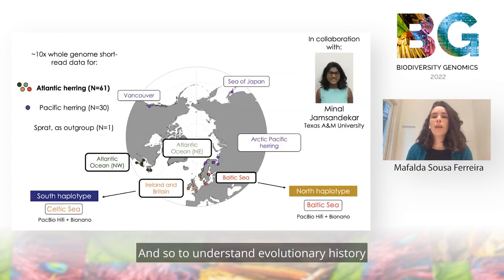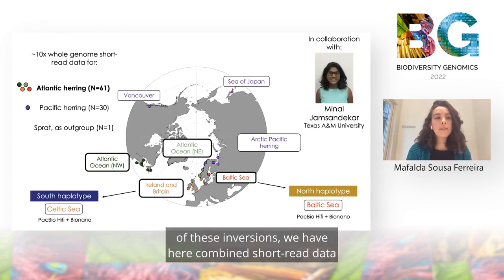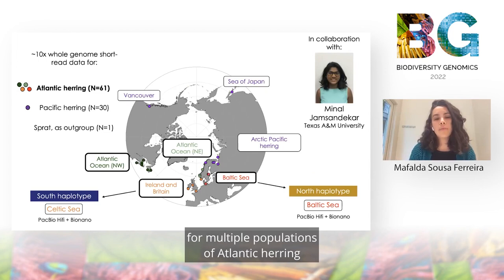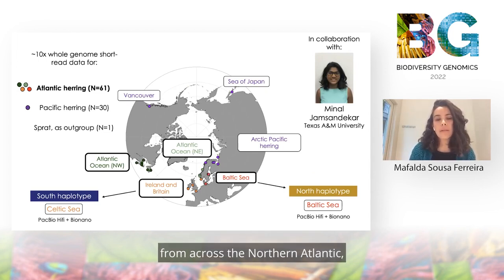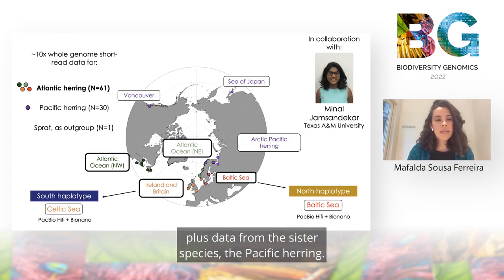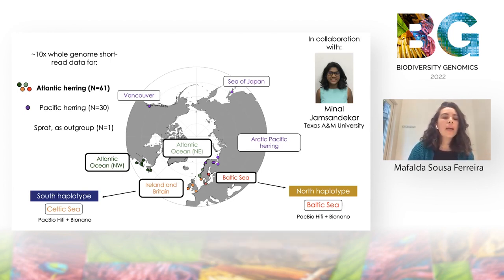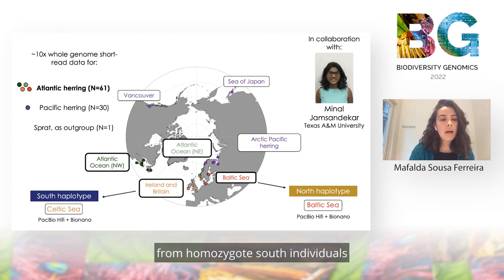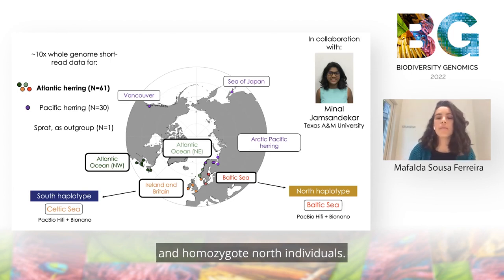To understand the evolutionary history of these inversions, we have combined short-read data for multiple populations of Atlantic herring from across the Northern Atlantic, plus data from the sister species, the Pacific herring. We also generated long-read data from homozygote South individuals and homozygote North individuals.